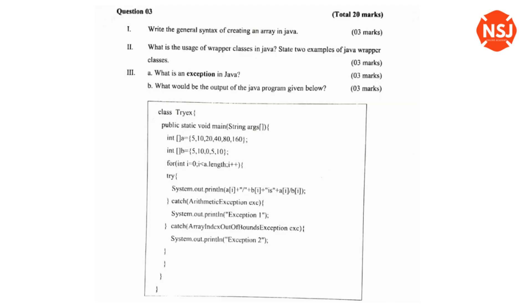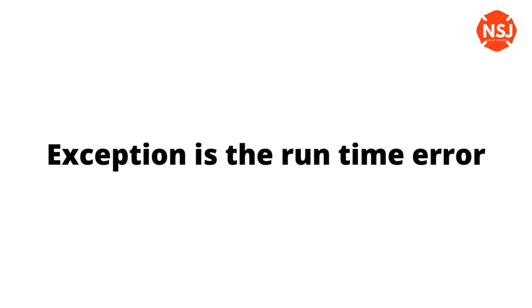Now, there is an exception. Exception handling is the last topic. The exception handling covers arithmetic exceptions, array index out of bounds, null pointer exceptions, and others. What is an exception in Java? An exception is a runtime error. A Java exception is a runtime error.